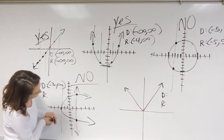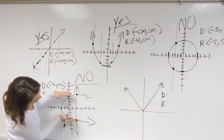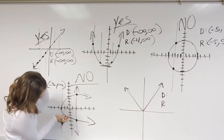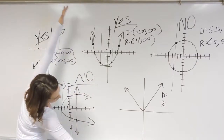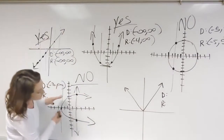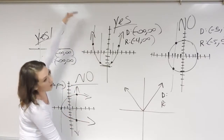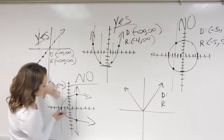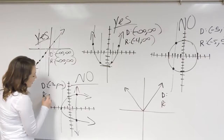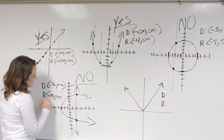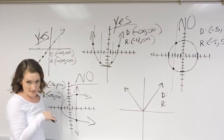For the range, we're looking up and down. These arrows mean this parabola is going to keep going and going and eventually hit all y-values, going off infinitely. So for the range, this will be negative infinity to positive infinity.